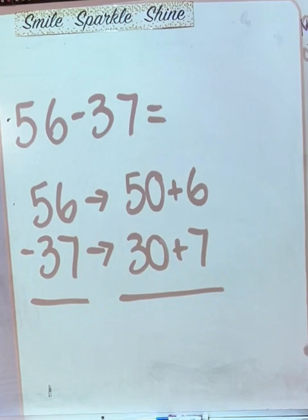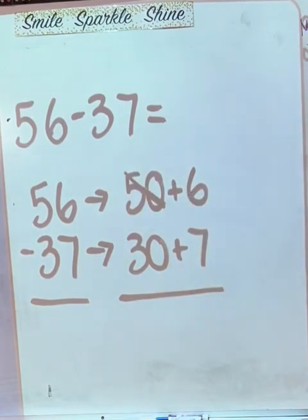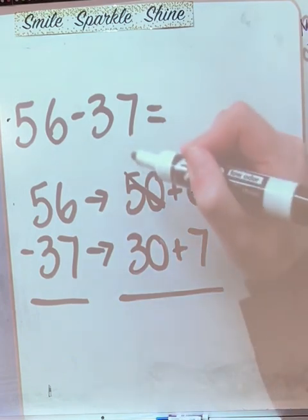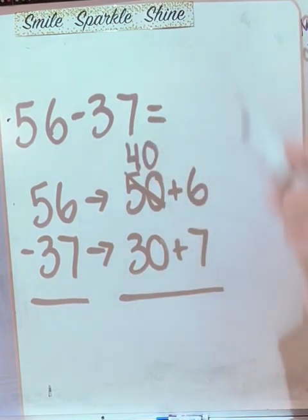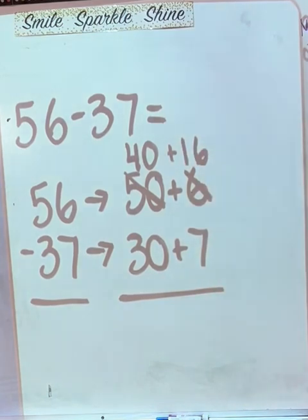We'll take a 10 from the 50. Yes, I'm going to take that 10 from the 50, so the 50 becomes 40. Good. And then we'll add the 10 to the 6, so we would have 40 plus 16. Yes. The new expanded form of 56 is going to be 40 plus 16. It still equals 56, it's just a different way to make it.